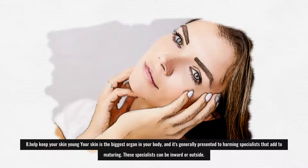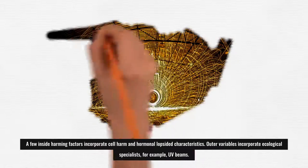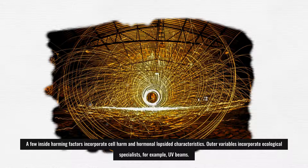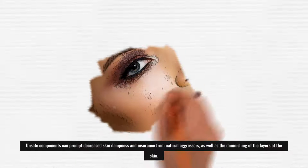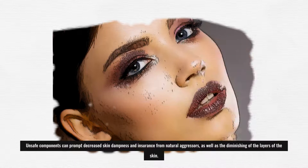These specialists can be inward or outside. A few inside harming factors incorporate cell harm and hormonal lopsided characteristics. Outer variables incorporate ecological specialists, for example, UV beams. Unsafe components can prompt decreased skin dampness and insurance from natural aggressors, as well as the diminishing of the layers of the skin.